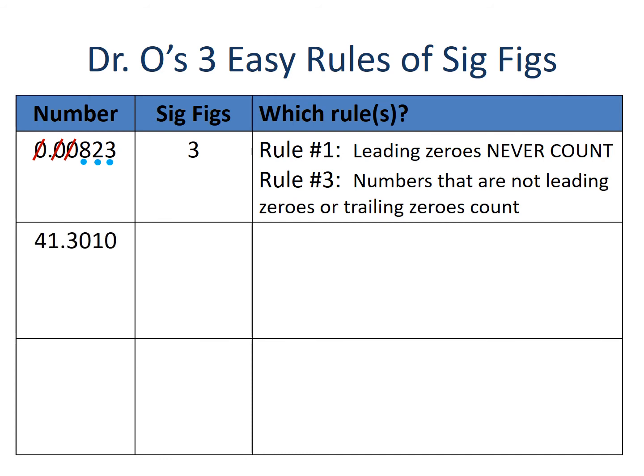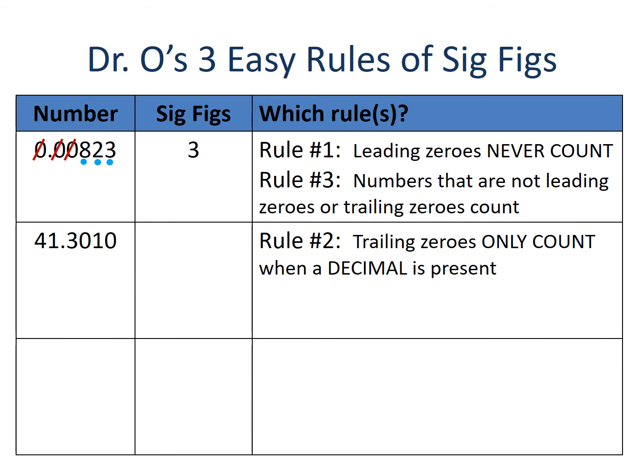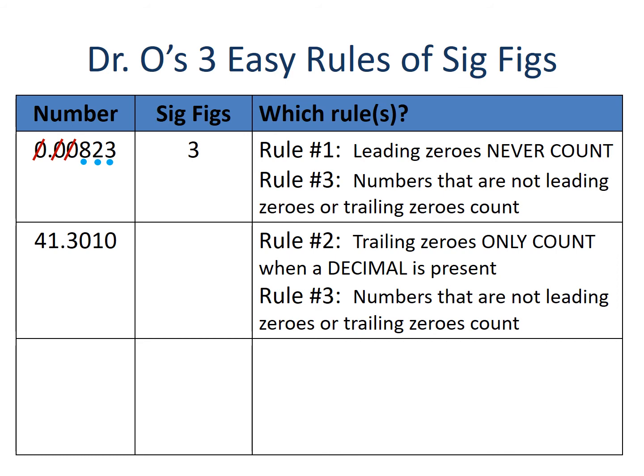Here we have 41.3010. We have a trailing zero — rule number two says trailing zeros only count when a decimal is present. There is a decimal, even though it's all the way to the left between the 1 and the 3. Its mere presence means any zeros at the end of this number count. We also invoke rule number three for the non-zero numbers. So all digits count — 41.3010 has six significant figures.